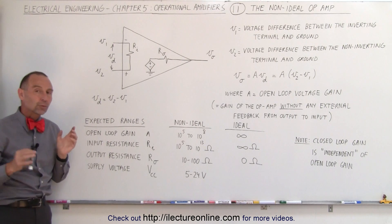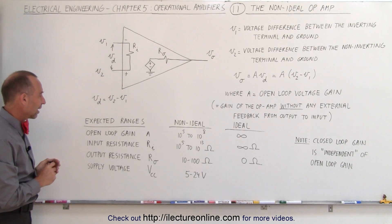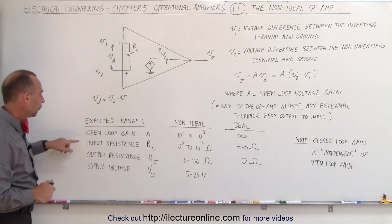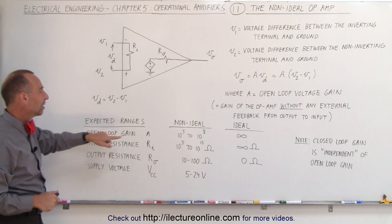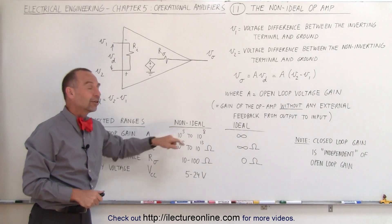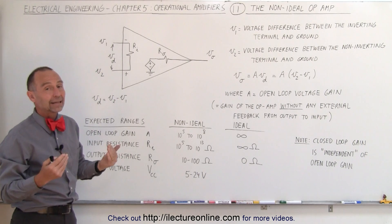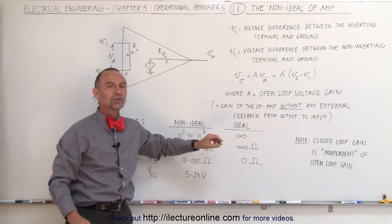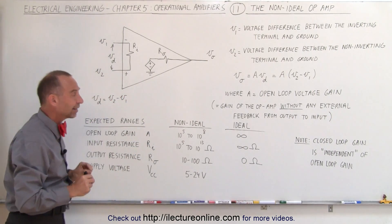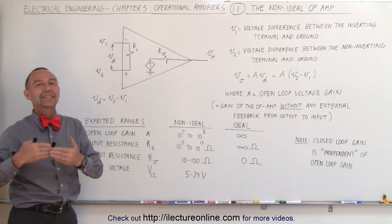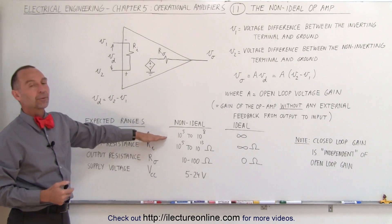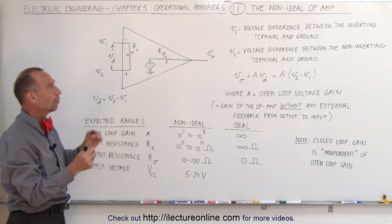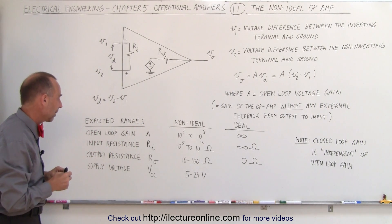Now expected ranges of certain values inside the operational amplifier. First of all, the open loop gain is typically 10 to the 5th to 10 to the 8th, so that's a very large gain. And ideally, when we talk about an ideal operational amplifier, it should be infinity. So that's always a very large value. Of course you typically don't get that large value from an operational amplifier. This is just what we call the non-ideal operational amplifier.